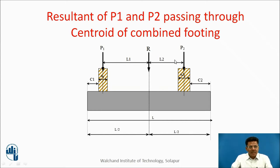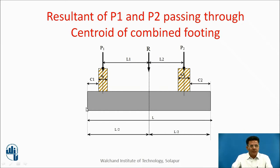Ultimately, the resultant of these two forces must cut the footing at half its length — L/2 and L/2 — so that there will be uniform pressure distribution below the footing. This is the basic idea. The projections can be different depending on the heavy or light loads.